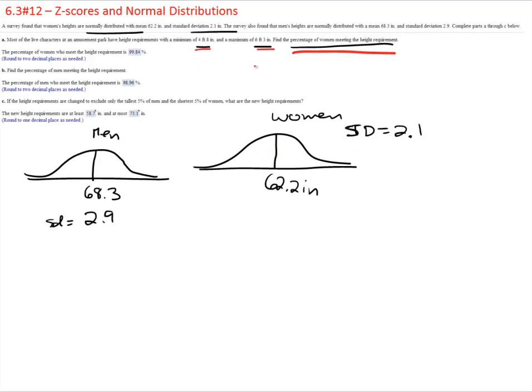The first thing we have to do is put them in the right measurement. Instead of 4 feet 8 inches we have to make them just all inches. So 4 feet of course is 48 plus 8, so that is 56, and then 6 foot 3, well 6 is 72 inches plus 3 equals 75. So they are asking for what percentage of women are between 56 and 75. We are looking for all of that.